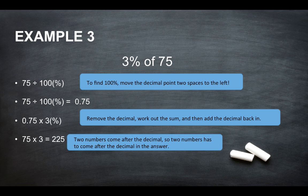Two numbers come after the decimal point, so two numbers has to come after the decimal point in the answer. So we'll give you the answer of 2.25.